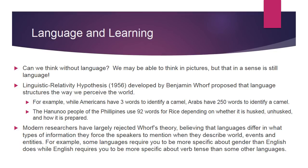For example, while Americans have three words to identify a camel — camel, dromedary, and a third — Arabs have 250 words to identify a camel. The Hanu people of the Philippines use 92 words for rice, depending on whether it is husked, unhusked, and how it is prepared. Americans have maybe seven words for rice. In a certain way, from a sociological point of view, the more important something is to a society, the more words we have for it.